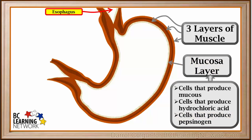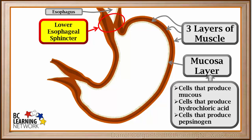Food enters the stomach through a tube called the esophagus. A ring of muscle at the bottom of the esophagus is called the lower esophageal sphincter. The sphincter muscles can open or close the passage from the esophagus into the stomach. The lower esophageal sphincter is sometimes called the cardiac sphincter.